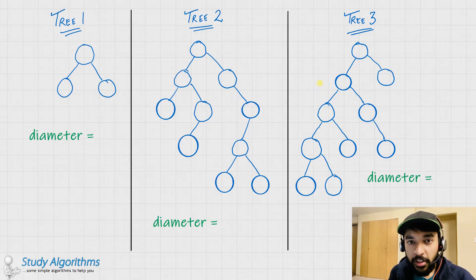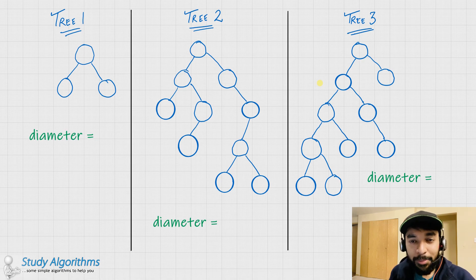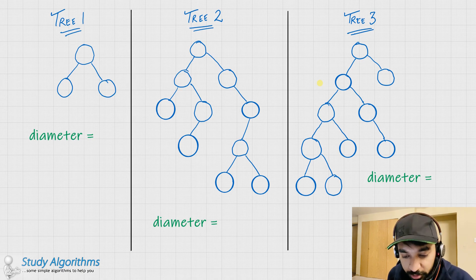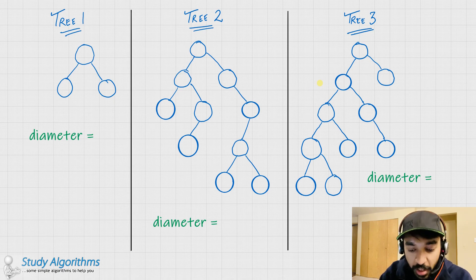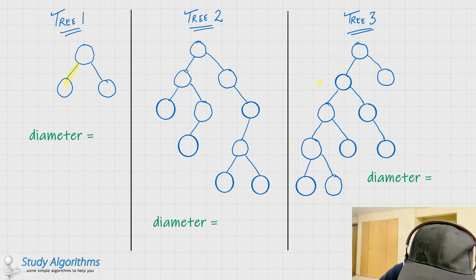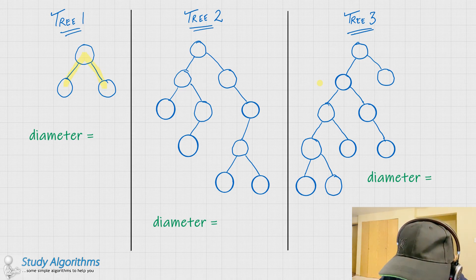To understand this problem, you first need to understand what is the diameter of a binary tree. The diameter of a binary tree is simply stated as the longest possible path that you can find between any two nodes in a binary tree. To demonstrate it, let me take up three examples. In tree number one, the longest possible path between two nodes that you can find would be this. In tree number two, the longest possible path that you can find would look something like this.